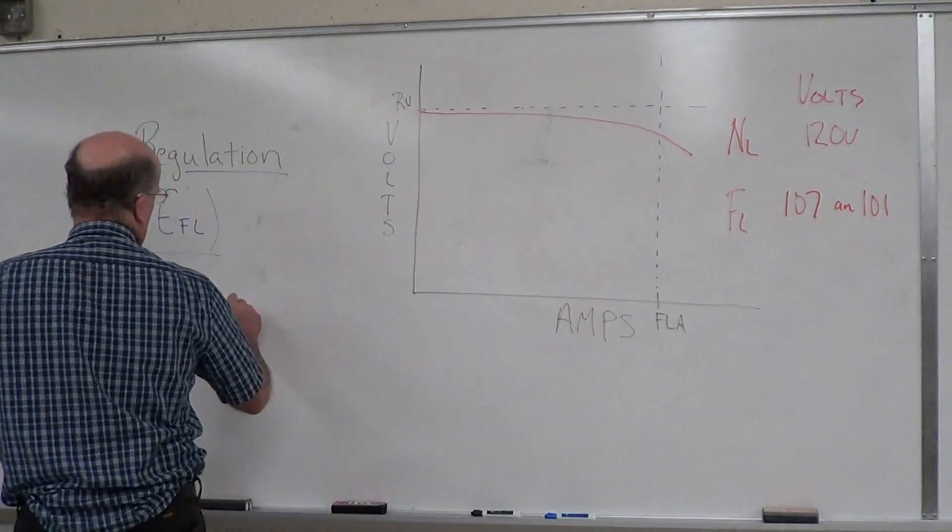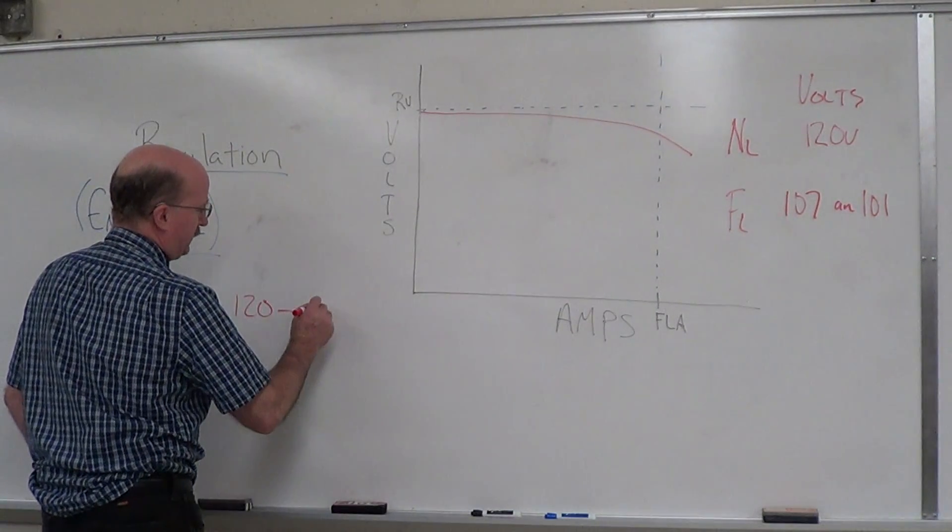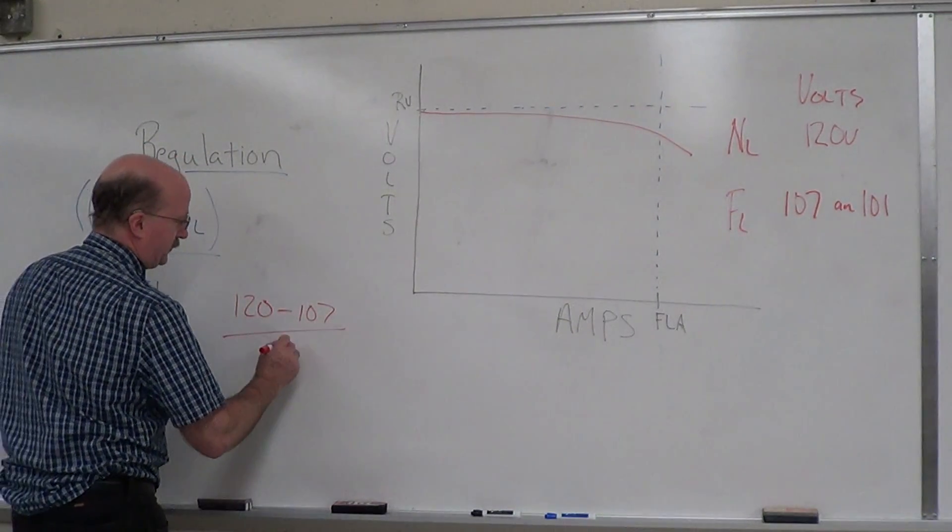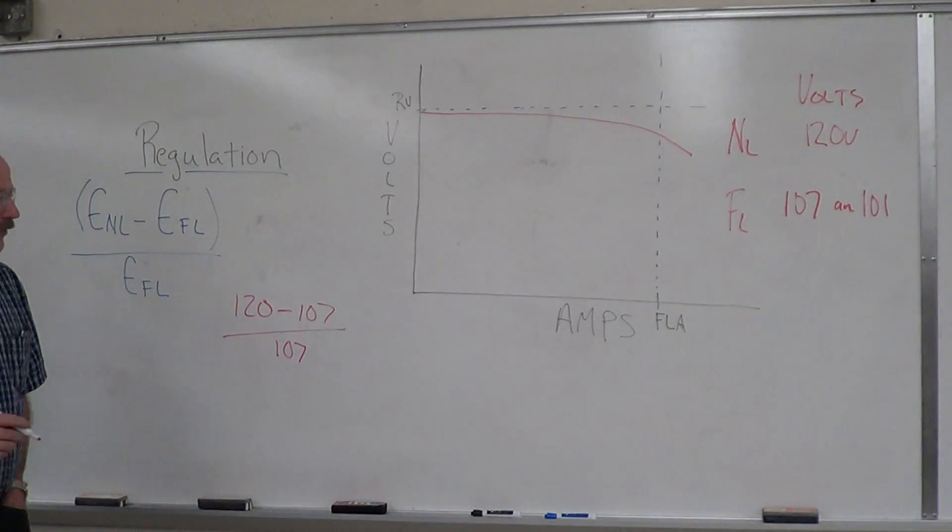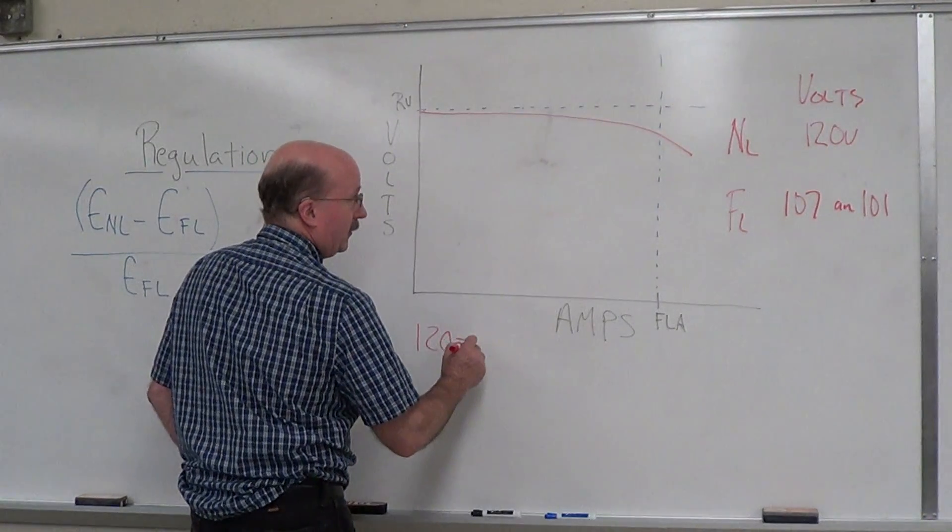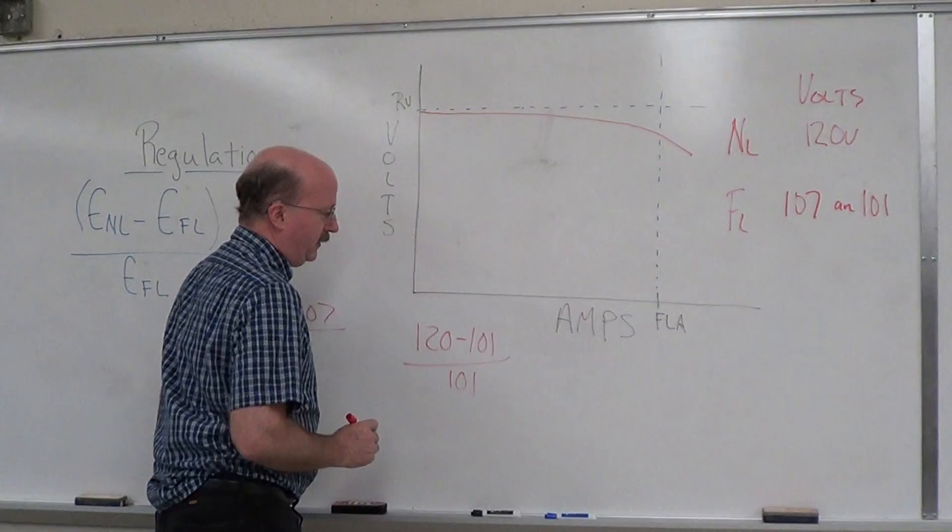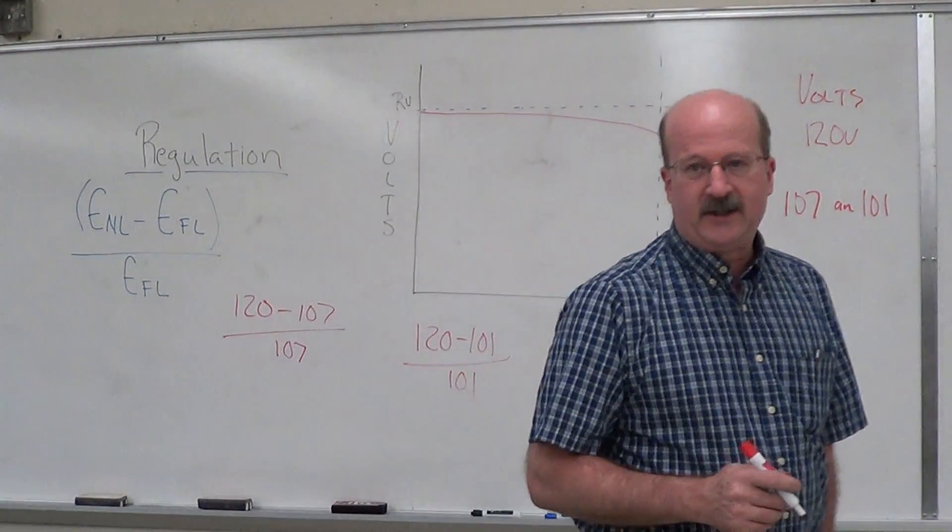So if you have 120 minus 107 divided by 107, that'll be one rate of regulation. The other one is 120 minus 101 divided by 101. What do we get for the two percentages on those?